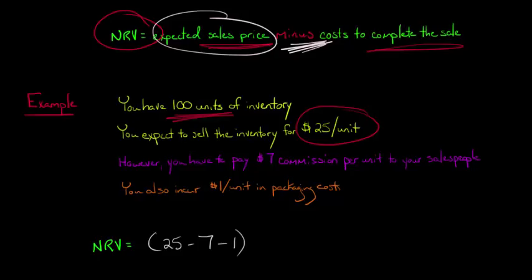And then we just take that and we multiply that by 100. And the reason by 100 is because we have 100 units of inventory. So we want to get the total net realizable value of all this inventory, and that's going to be $1,700. Because if we just think about it on a per unit basis, this $25 minus 7 minus 1, we're going to have $17. So that's $17 is our net realizable value per unit, but we have 100 units. So our total net realizable value for this inventory is $1,700.